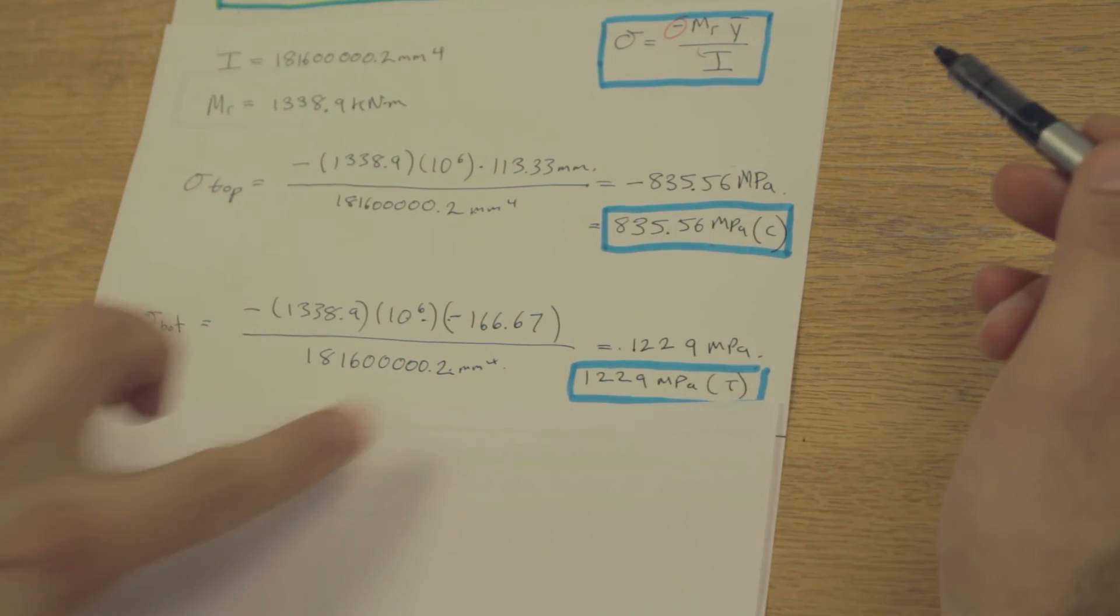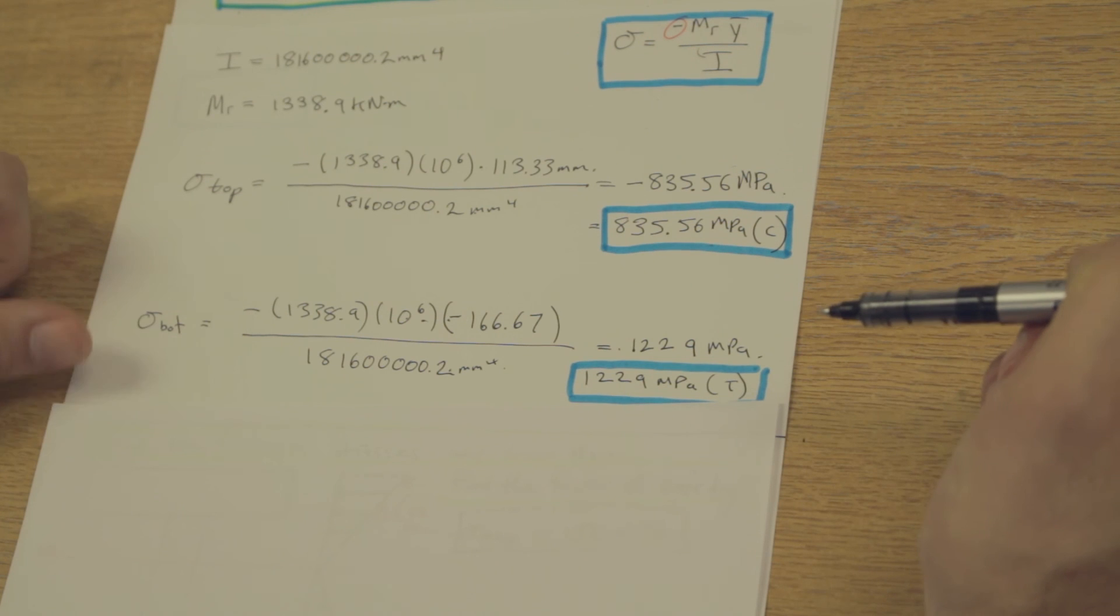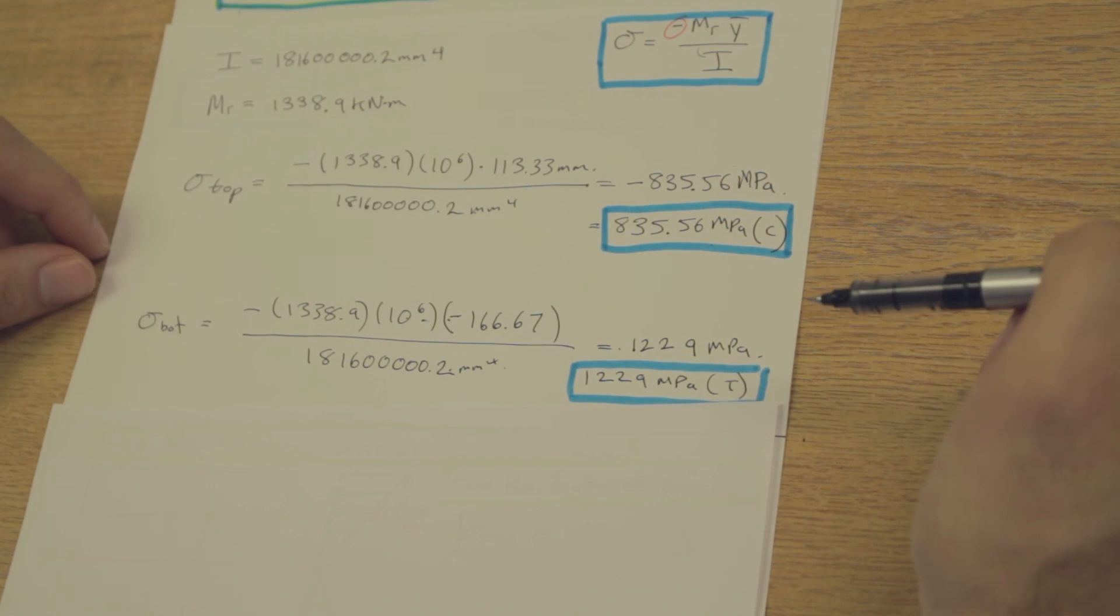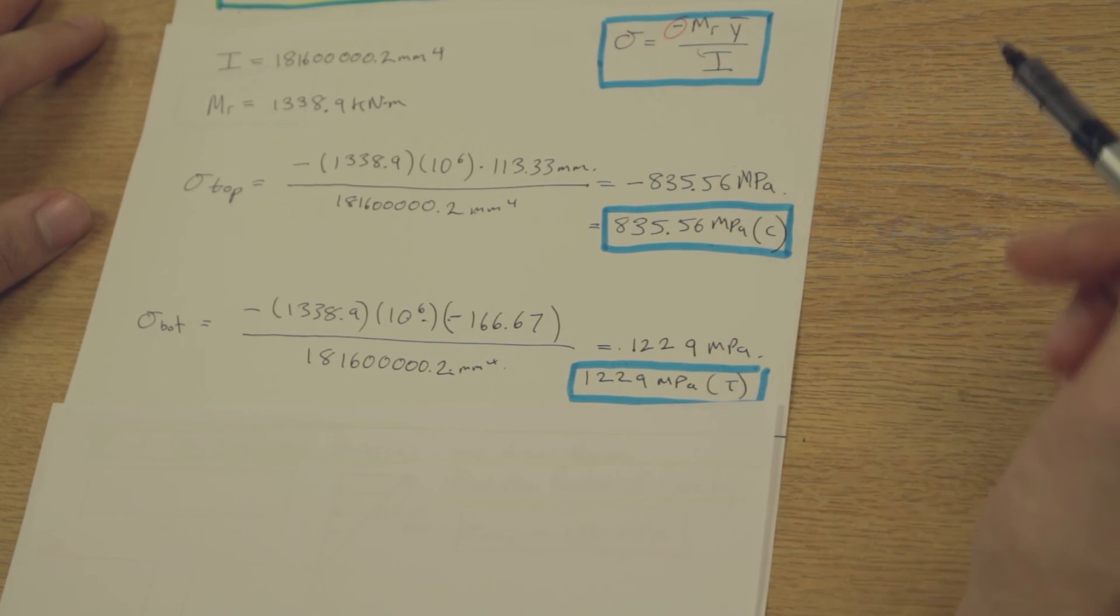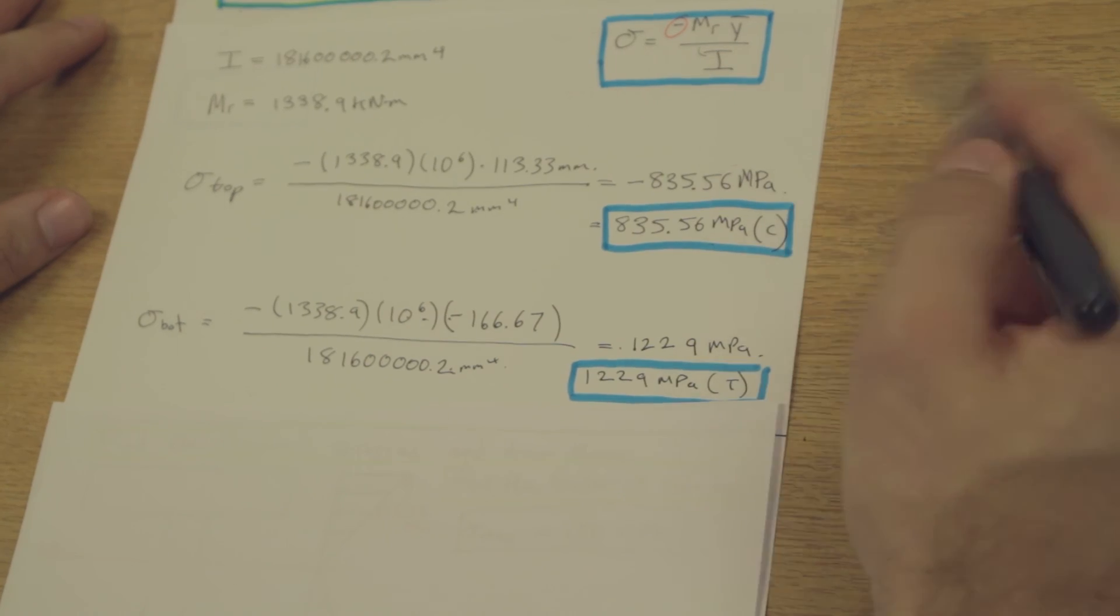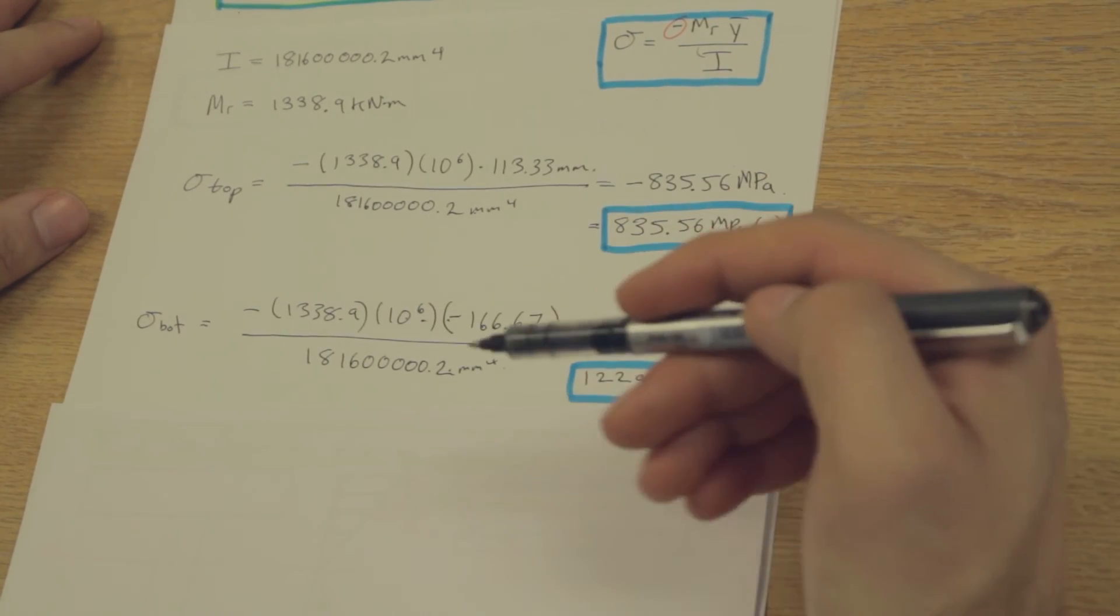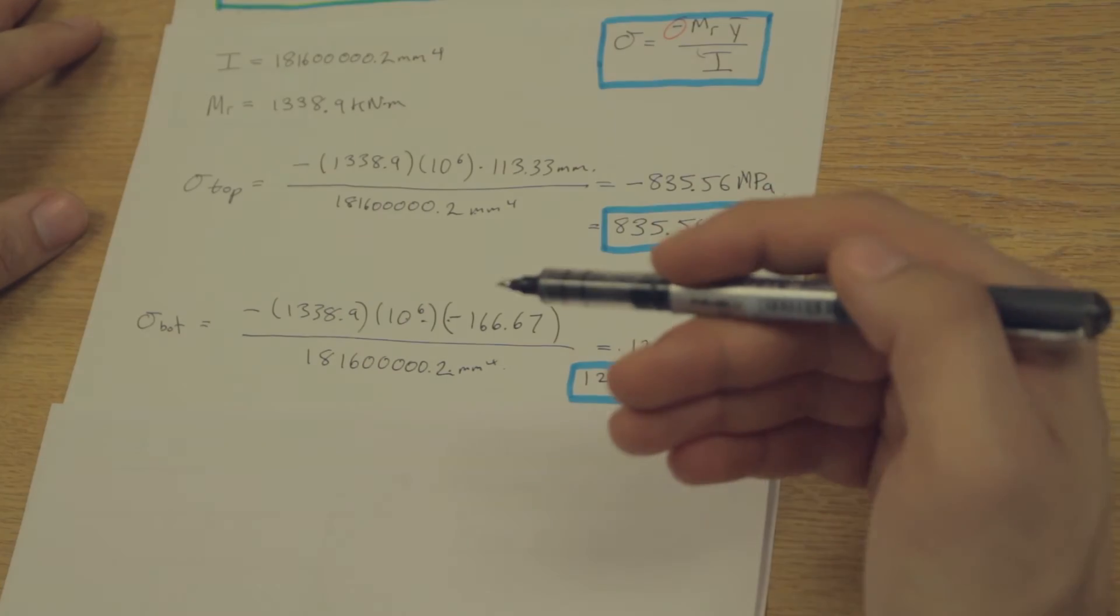and we are arriving at 1,229 megapascals. That's a positive sign. The two negatives are canceling. So we have a tensional flexural stress on the bottom half of the cross-section. And that's it, it's as simple as that. Stay tuned in the next video. We're going to show you how to draw these flexural stresses, and we're going to try and solve for the factor of safety of the beam and make sure that it's safe. Thanks for watching, guys.